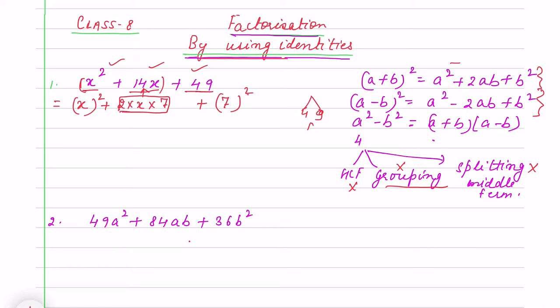In the question it is 14x. I am just verifying that if I try to change in the form of identity, I am getting a² + 2ab + b². What is that? It is (x+7)². As I have to factorize from quadratic polynomial to linear, I will write it as (x+7)(x+7).